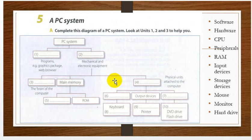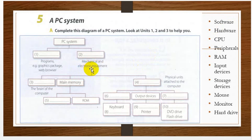In section 5, complete this diagram of a PC system. Look at units 1, 2, and 3 to help you. The PC system includes: programs, graphic packages with browser software, mechanical and electronic equipment that is hardware, and so on. These are the answer keys.